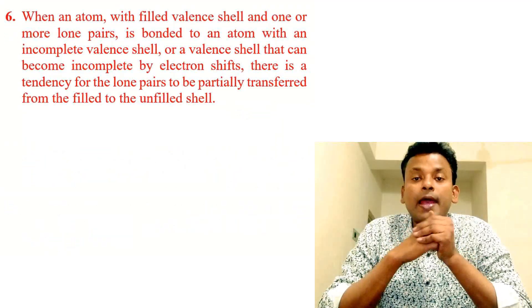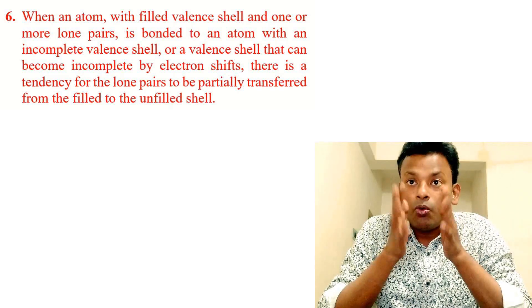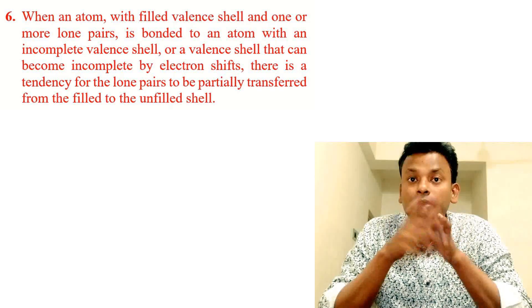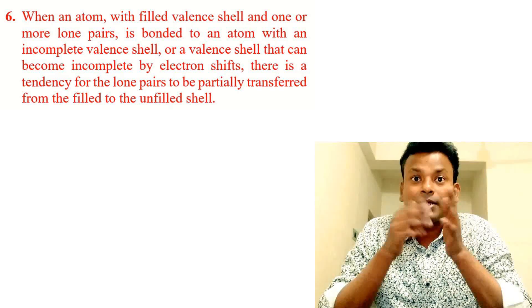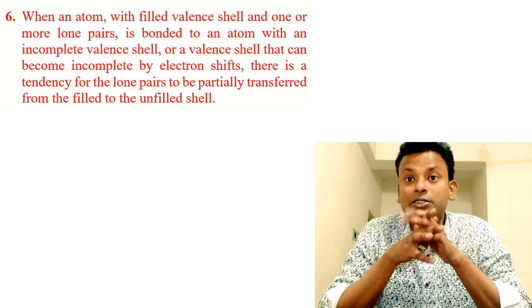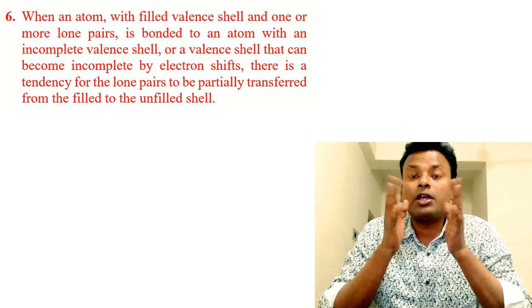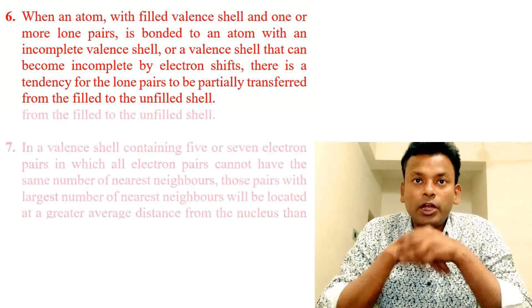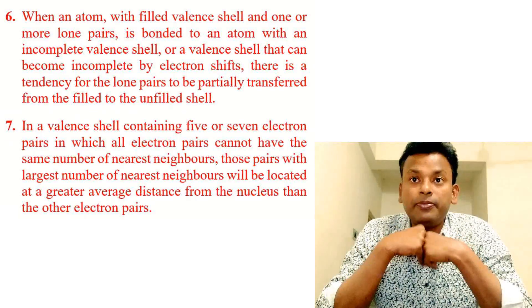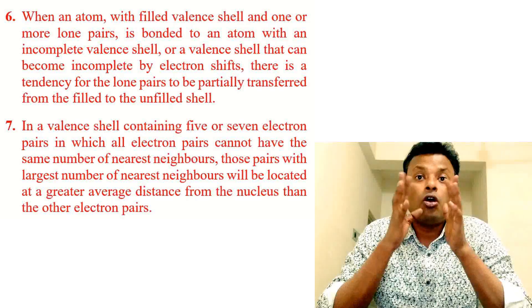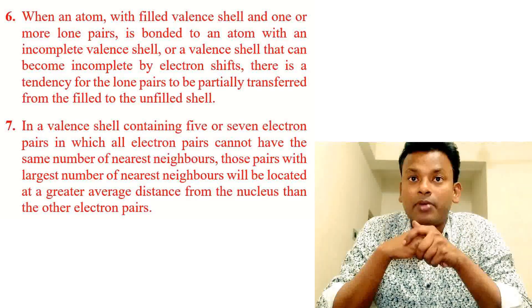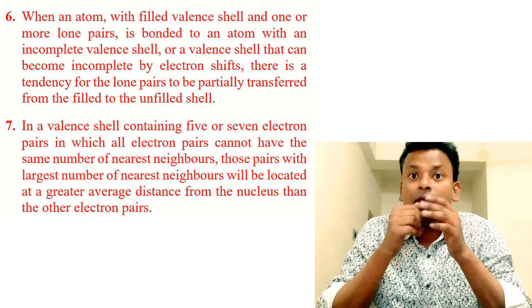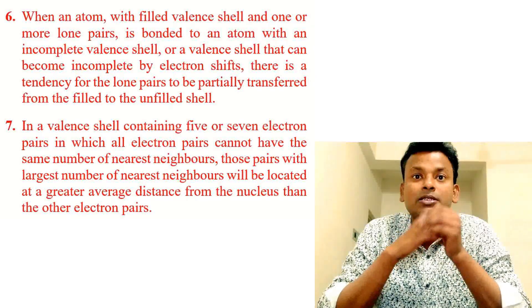Since the geometry of a molecule does not depend on multiple bonds, the two or three electron pairs of a multiple bond are treated as a single super pair. Point five: repulsion between electron pairs in a filled shell are greater than those between electron pairs in an incomplete shell. Point six: when an atom with a filled valence shell and one or more lone pairs is bonded to an atom with an incomplete valence shell, there is a tendency for the lone pair to be partially transferred from the filled to the unfilled shell. Point seven: in a valence shell containing five or seven electron pairs where all pairs cannot have the same number of nearest neighbors, those pairs with the largest number of nearest neighbors will be located at a greater average distance from the nucleus.